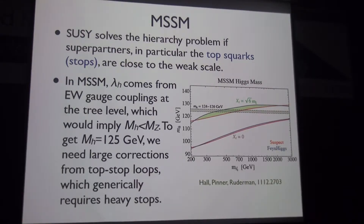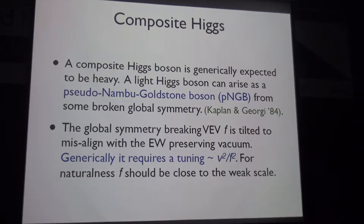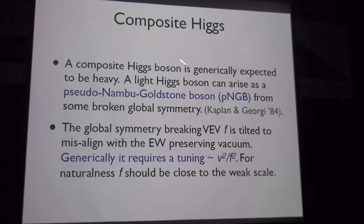Turning to the composite Higgs model: composite Higgs bosons typically arise from some strong dynamics, and the naive expectation is that all couplings are large and the Higgs should be heavy. This conflicts with the observed light Higgs. The natural way out is that the light Higgs boson arises as a pseudo-Nambu-Goldstone boson from a spontaneously broken global symmetry, an idea going back to Kaplan and Georgi in 1984.